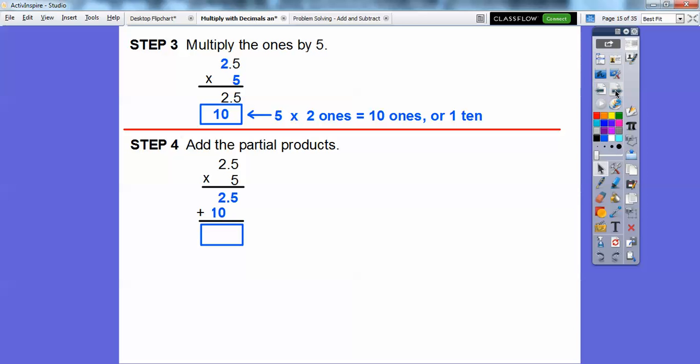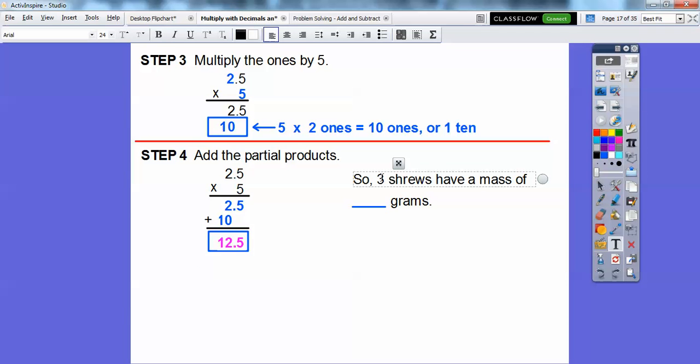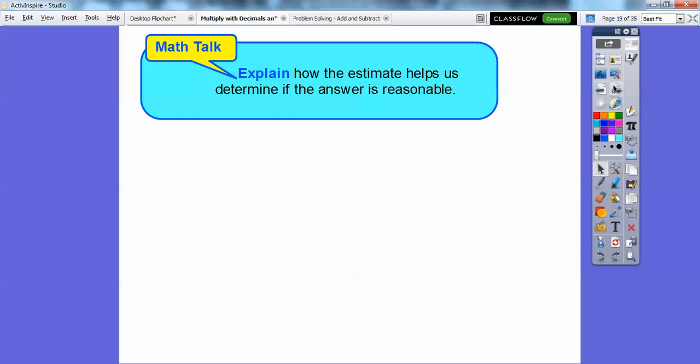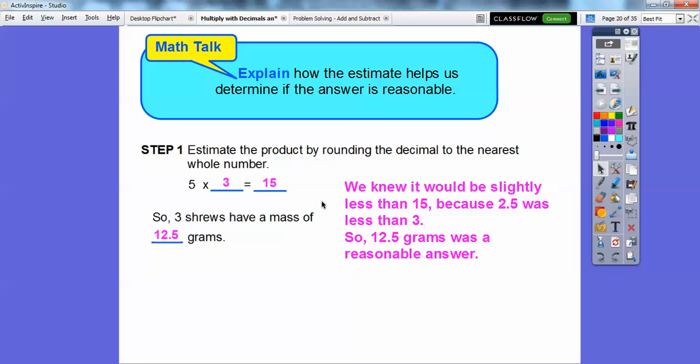Then the next thing we're going to do is we're going to add the partial products. We're going to add this 2.5 with this 10 right here. So it's going to give us 12.5. All right, let's answer the question. So the 5 shrews will have a mass of about 12.5 grams right there. So explain how the estimate helped us determine if the answer was reasonable. Well, remember when we talked about 3 being a little bit more than the 2.5 right there, since 5 times 3 is going to be 15, we knew that our estimate of 12.5 was going to be a little less than 15, and that's a little bit less than 15, so that's a reasonable answer.